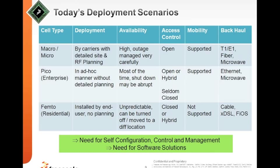For residential femto deployments, installation is done by the end user with no real planning — the box is placed wherever other electronic gear is sitting. Availability is unpredictable because people can turn these things off or move them. Bandwidth sharing with other users is difficult to control, it's a closed access type with authentication required, and mobility is not really supported since it's an isolated access point with cable or DSL backhaul.